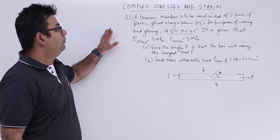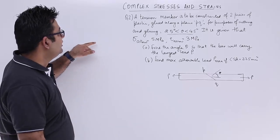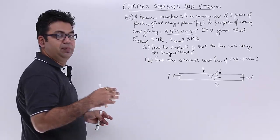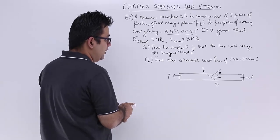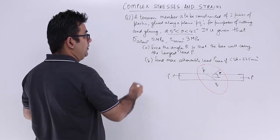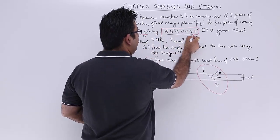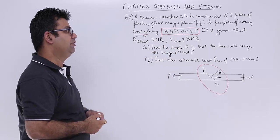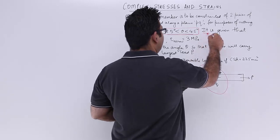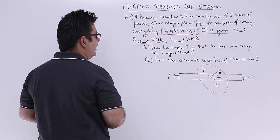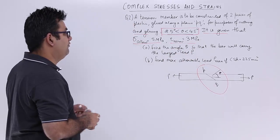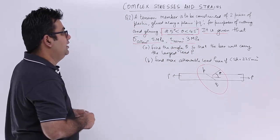Now let's come to question 2 on complex stresses and strains. A tension member is to be constructed of two pieces of plastic which are glued together along plane PQ. For purposes of cutting and gluing, the angle theta should be between 25 degrees to 45 degrees, so we have a given range for it.